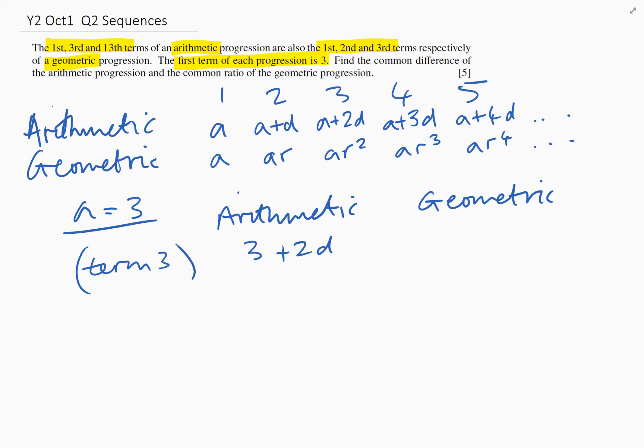For the geometric, we need the second term for that. So term three of the arithmetic equals term two of the geometric, and term two of the geometric will be ar. But once again, we already know that a is three, so we can just put three in there.